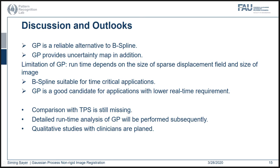To sum up our findings, quantitative results indicate that modeling elastic deformation as a Gaussian process with squared exponential kernel is a reliable alternative to B-spline interpolation in terms of accuracy. Considering both quantitative and qualitative results, we can conclude that with a suitable choice of hyperparameters, GP interpolation is comparable with B-spline interpolation. More importantly, it produces a confidence map about its own estimation, which could be used as a visual guidance for clinicians.